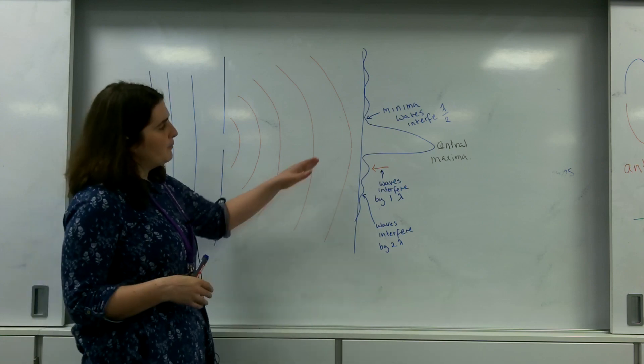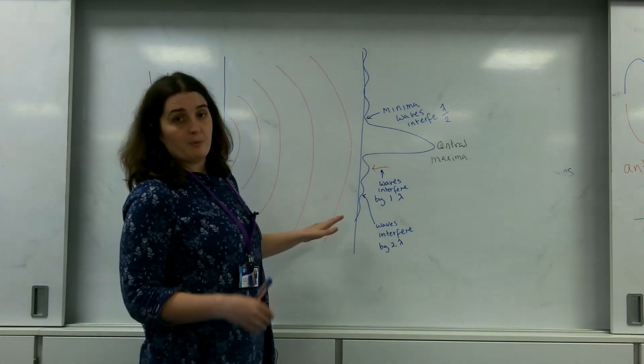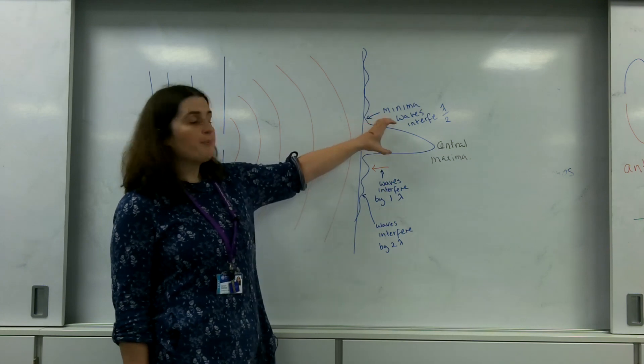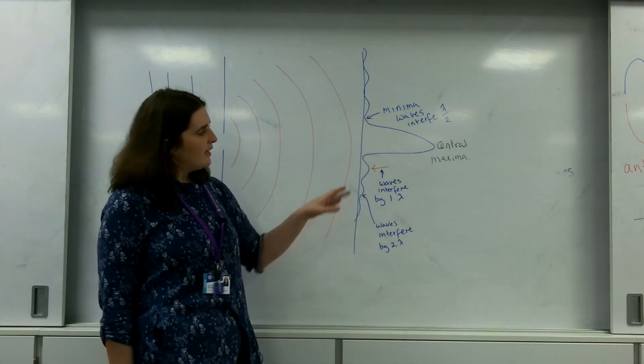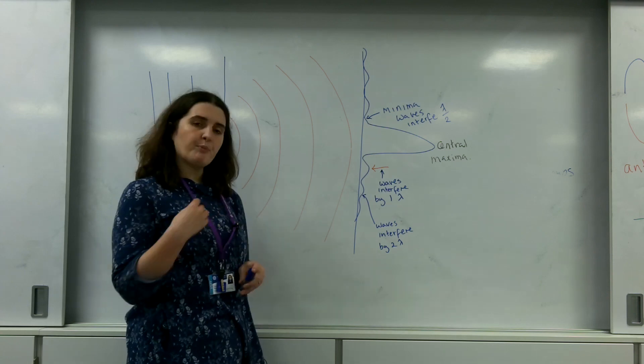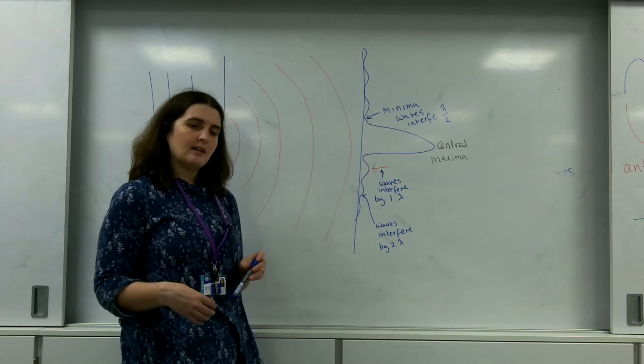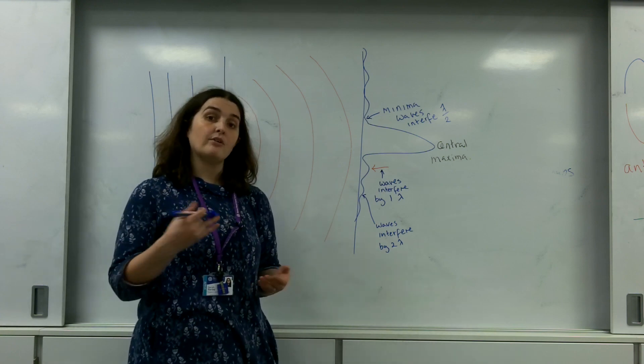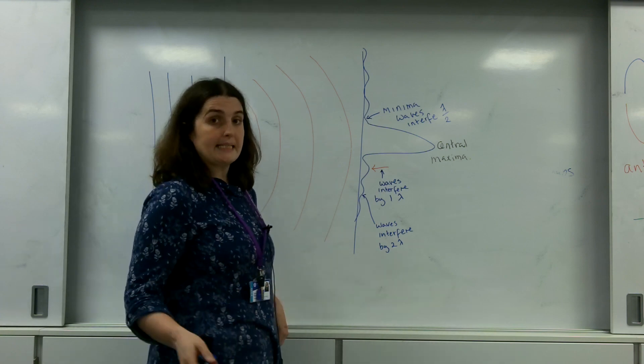For an exam, you'll be expected to be able to draw this for a single slit interference, a very bright central maxima, and these sort of diminished little bumps either side. This becomes far more pronounced when we start having two slits or more, and that will be featured later on in a video about Young's double slit.